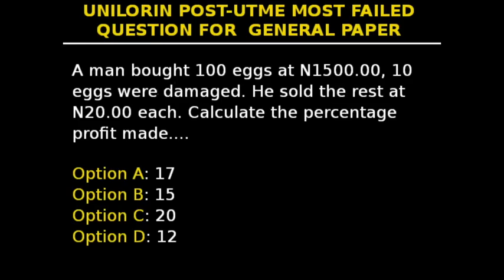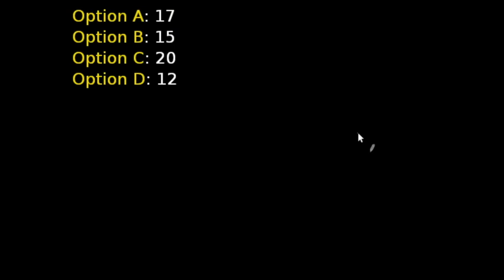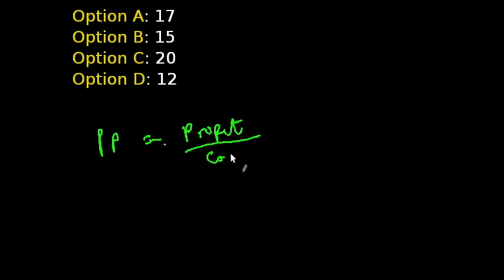This is question 22 in our series. A man bought 100 eggs at 1,500 Naira. Ten eggs were damaged. He sold the rest at 20 Naira each. Calculate the percentage profit made. When dealing with questions like this, know that the formula for finding percentage profit (PP) is: profit over cost price, times 100.